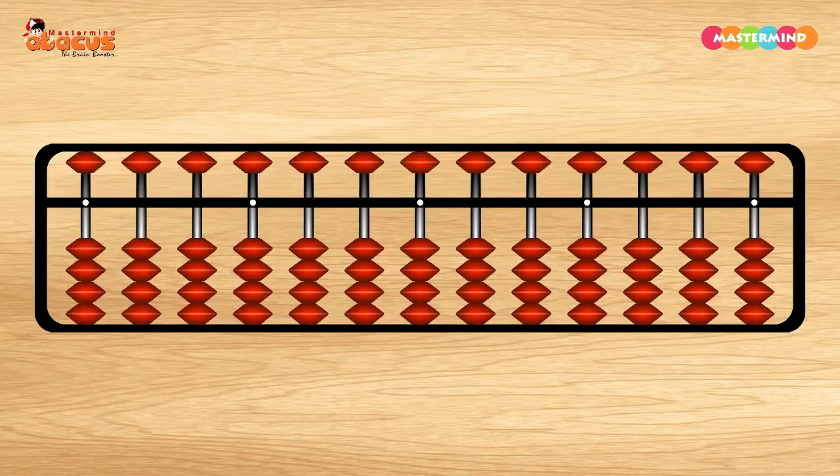We get value when the lower beads or the upper beads touch the horizontal bar. If the beads do not touch the horizontal bar, then we don't get the value.